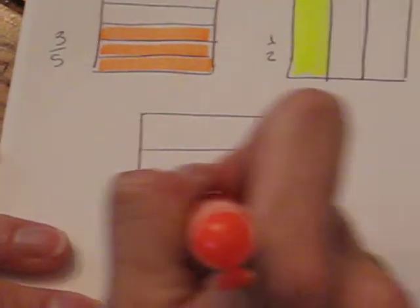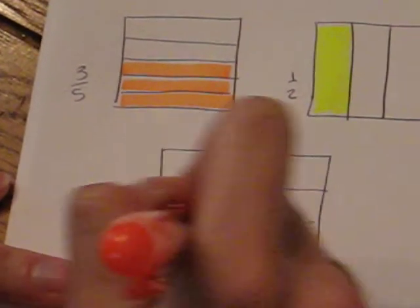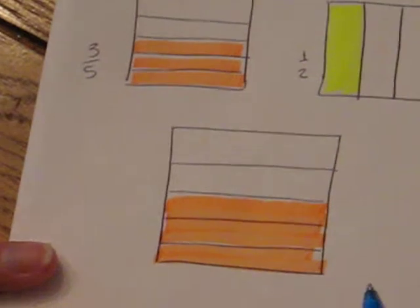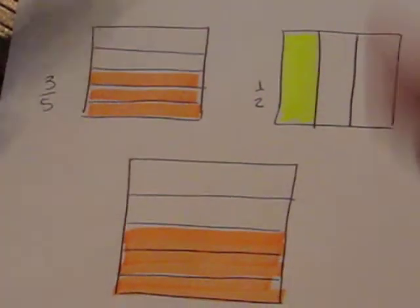Try to make the most proportional sized pieces as you can. So we're talking about, that represents three-fifths.